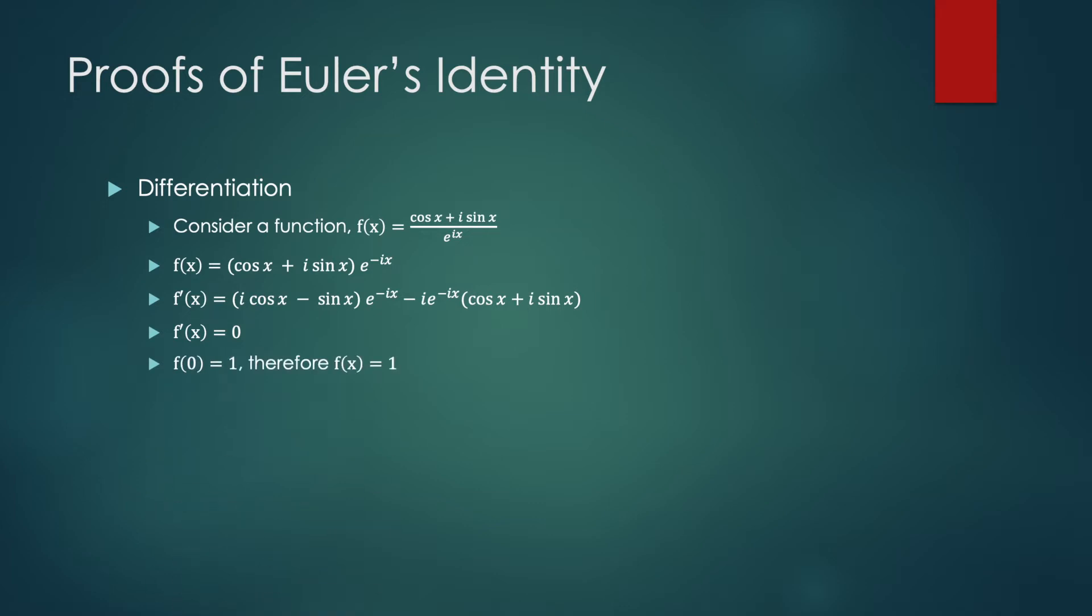So the derivative of f of X is zero. This means that our function is a constant; it has no change in magnitude as we change X. If we evaluate it for X equals zero, we can figure out what that constant is. e to the zero is one, and cos X plus i sin X evaluated at X equals zero is one, so one divided by one is one. Therefore, our constant is one, meaning our numerator is equal to the denominator, and we've proven that e to the IX equals cos X plus i sin X.